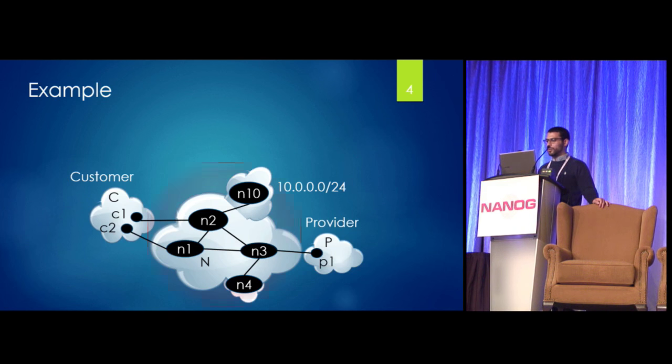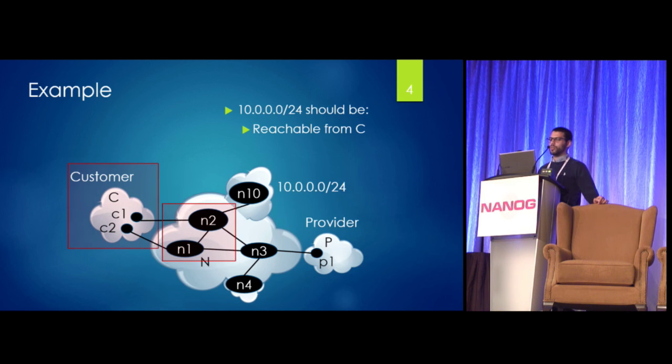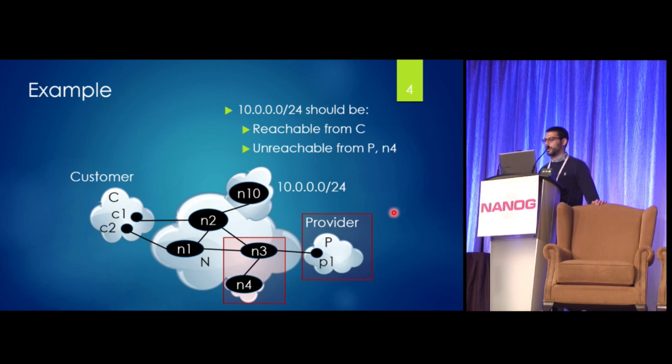So for example, we have this network in the center here. And on the top right, you see there's this 10.0.0.0 network. And we have a simple intent that we want to implement for this. We want 10.0.0.0 to be reachable from the customer C on the left, and we want it to be unreachable from the rest of the network that's not involved in the path to 10.0.0.0.